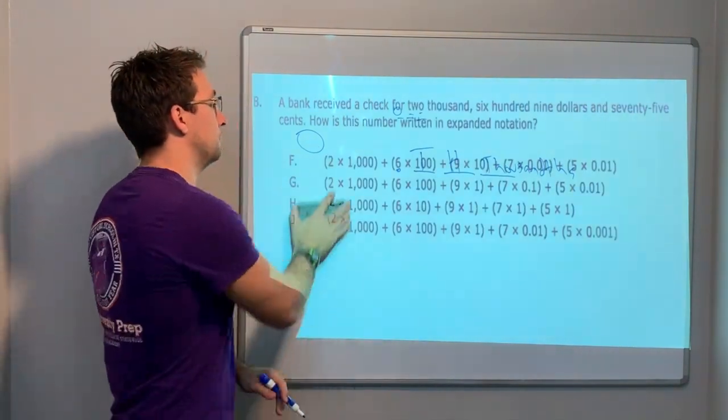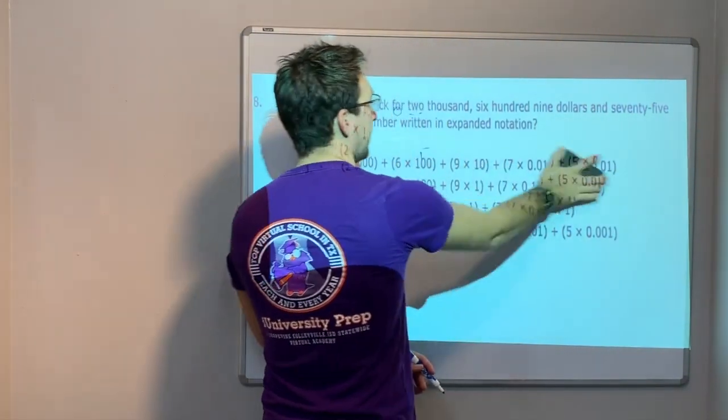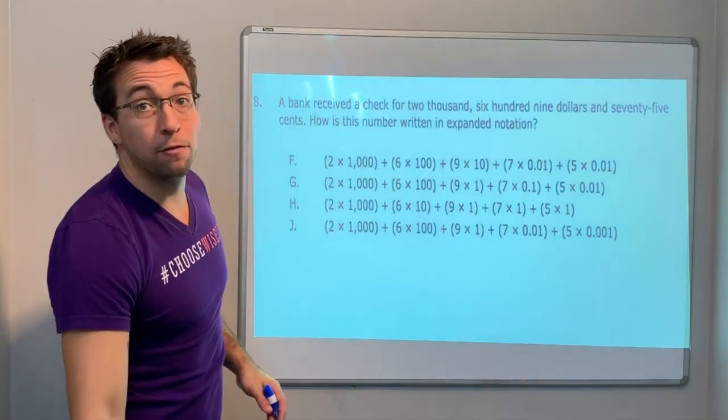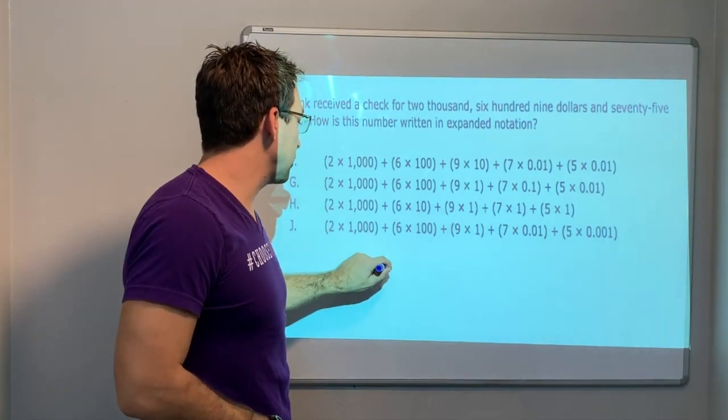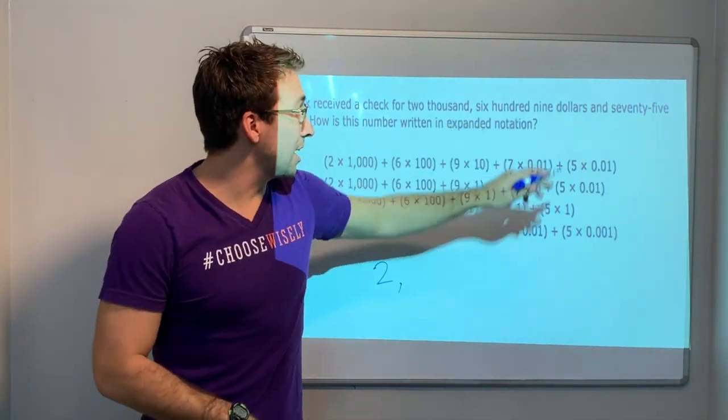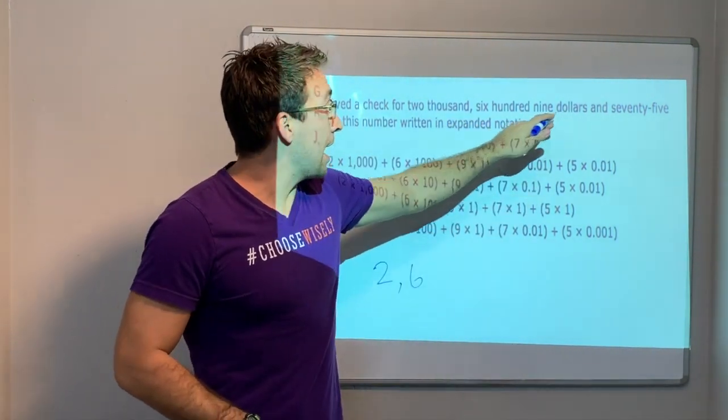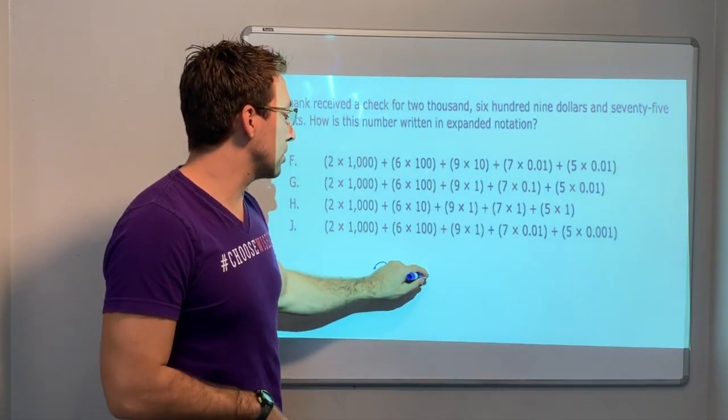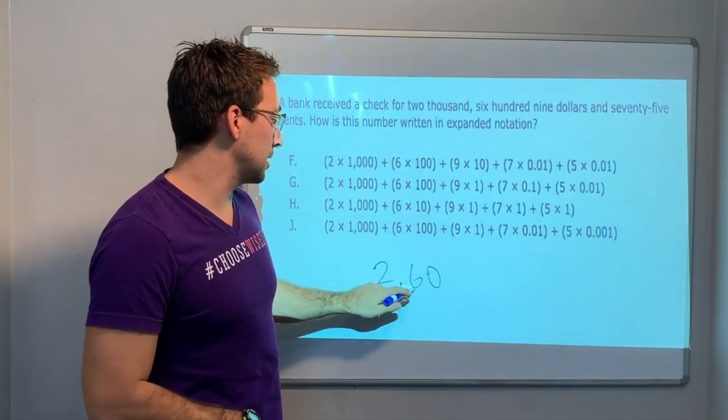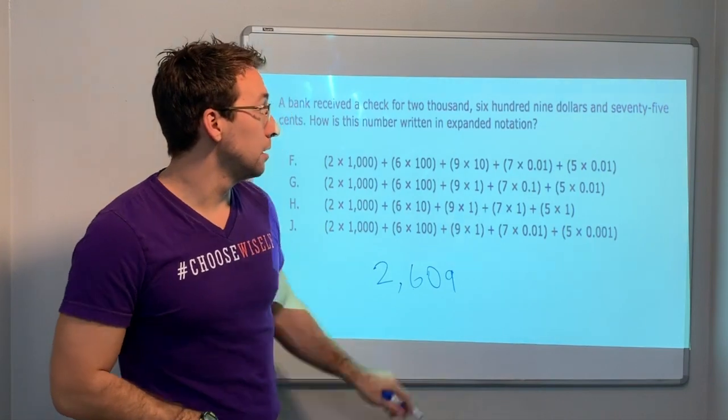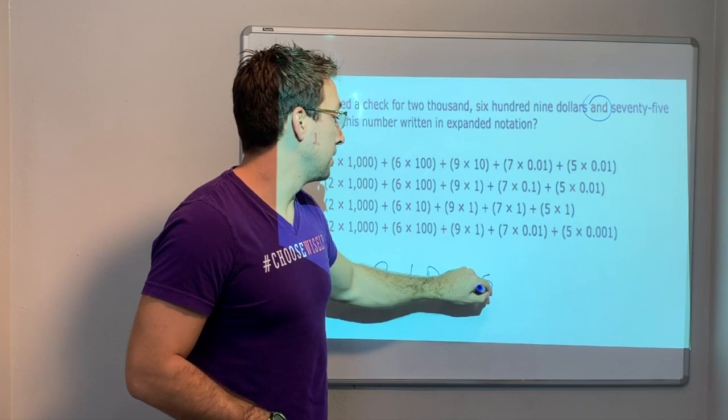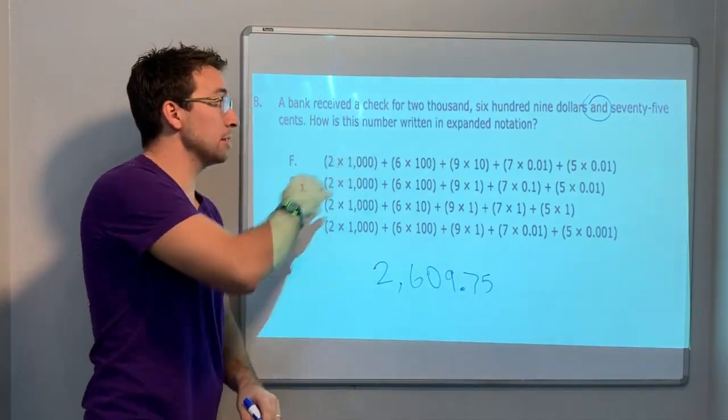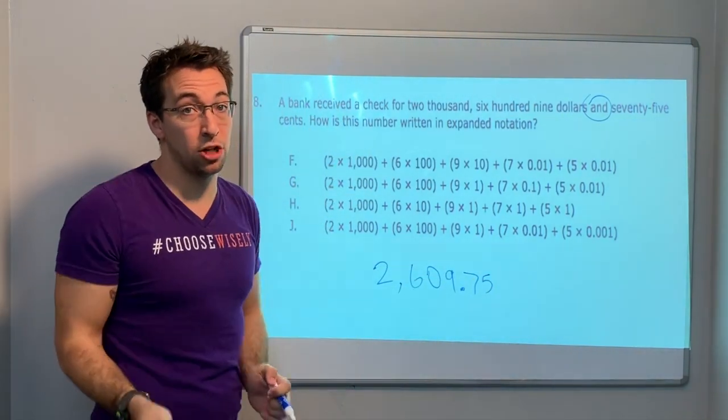Last question. Okay, this one's kind of tricky. A bank received a check for 2,000. So we'll just write this number: 2,609. Oh, so there's a zero here, because 609. And, here's our decimal, 75 cents. How is this number written in expanded notation form?